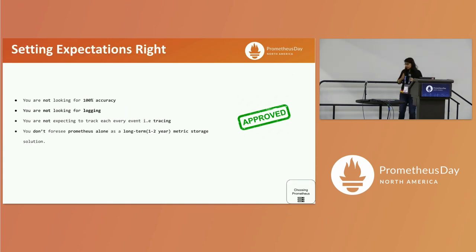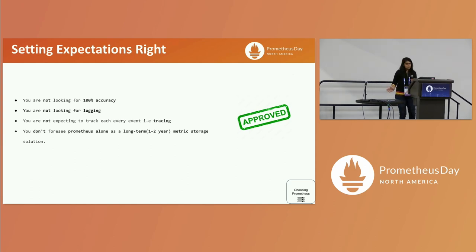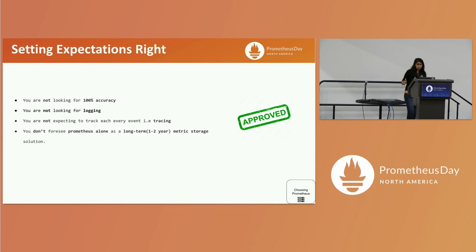Setting our expectations right. One of the biggest mistakes we can make while using Prometheus is to expect it to work as a logging or tracing solution, or expecting it to give us 100% accurate results. Prometheus is good enough for us to make operational decisions, but expecting it to be used for use cases where we care about each and every increment would be a bit much. When we have these expectations set right we can avoid a lot of mistakes in the long run.